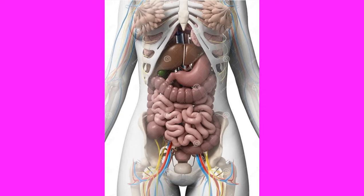The tenth system is the urinary system. The urinary system is made up of the kidneys, ureters, bladder, and urethra — note that ureters is spelled U-R-E-T-E-R-S, whereas urethra is spelled U-R-E-T-H-R-A. Your urinary system filters blood, removes waste products, regulates fluid balance, and assists in maintaining proper electrolyte levels and blood pressure.